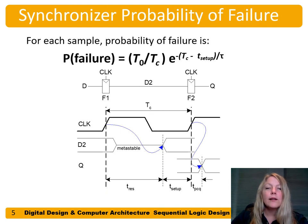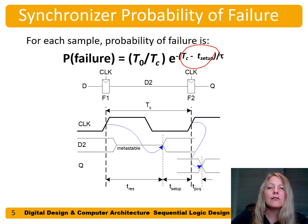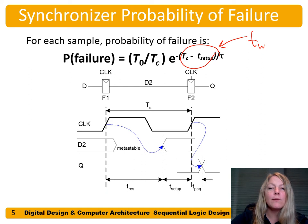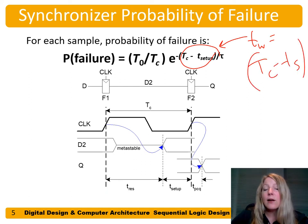So now our waiting time T, instead of just being a random T, is the time we're allowing it to regenerate: the cycle time minus the setup time, divided by tau. We've substituted T_waiting = TC minus T_setup, and now we can calculate this probability of failure for our synchronizer.